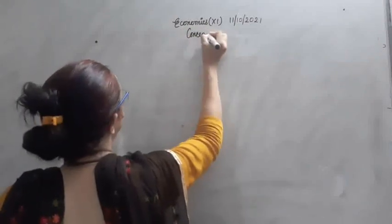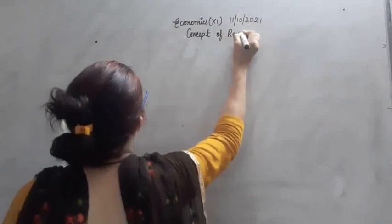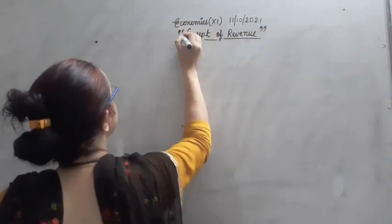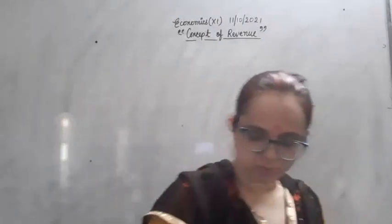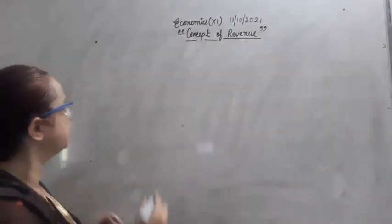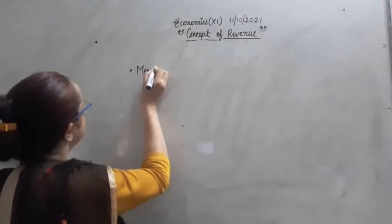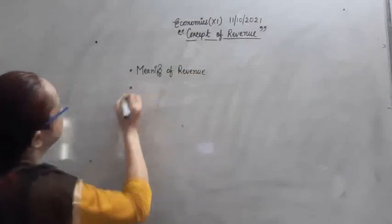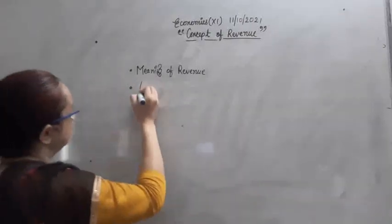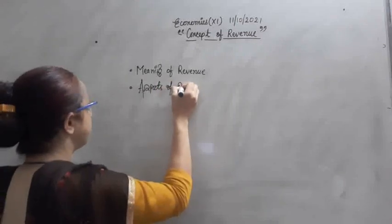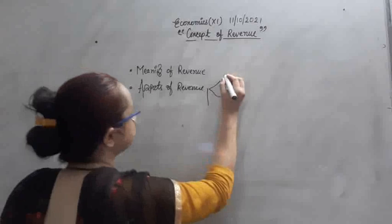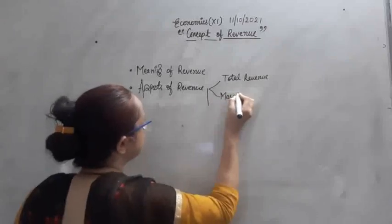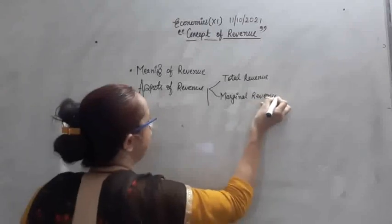In this chapter, we are going to discuss: firstly, the meaning of revenue; next, the aspects of revenue — total revenue, marginal revenue, and average revenue.